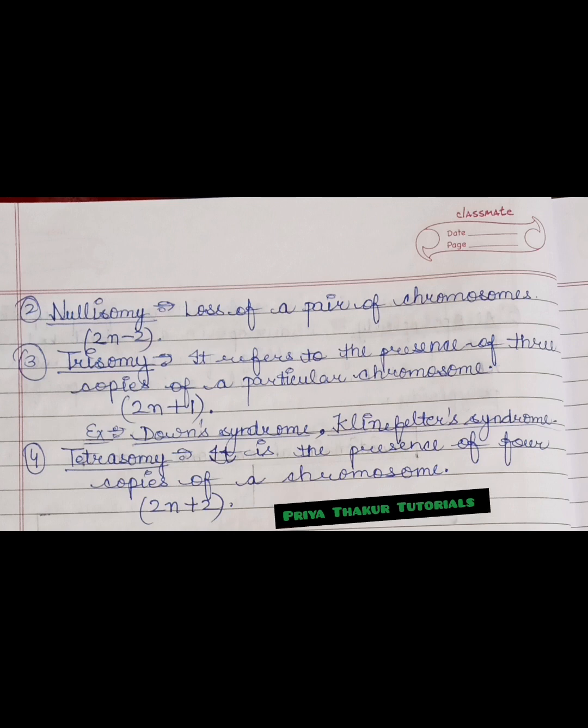The third one is trisomy. It refers to the presence of three copies of a particular chromosome, means 2n plus 1. For example, Down syndrome or Klinefelter syndrome. The fourth one is tetrasomy. It is the presence of four copies of a chromosome, that is 2n plus 2.